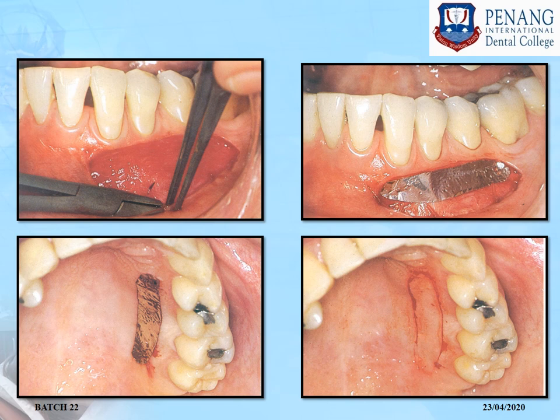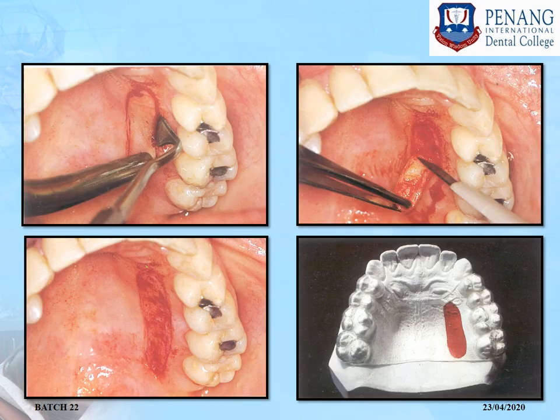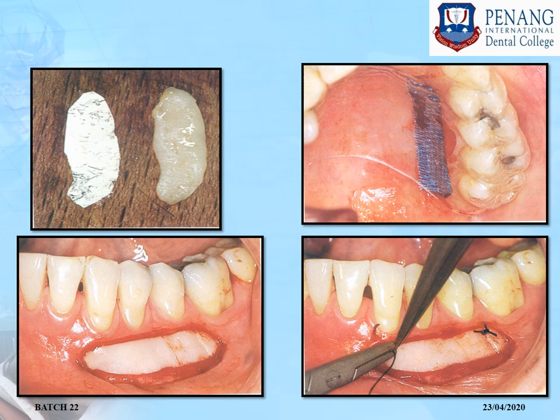This is how the palate will look after the incision has been given. The donor graft is taken using a Kirkland knife, since we are going for a partial thickness slab. This is how the donor site will look after graft removal. Pre-operatively, a Hawley's appliance with a rest in the area from where the graft will be taken is given to the patient for comfort protection of the donor site.